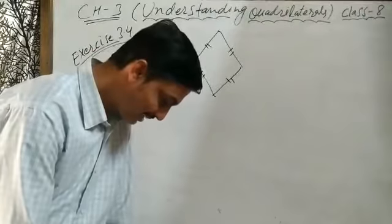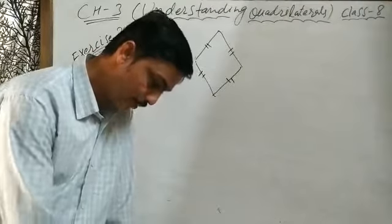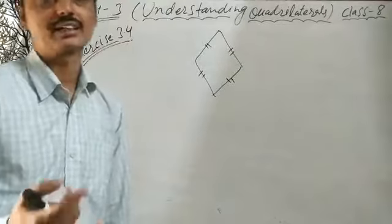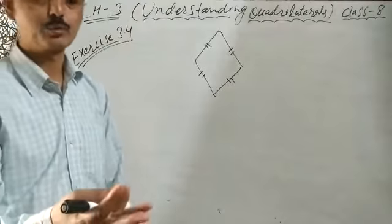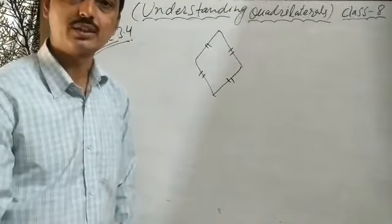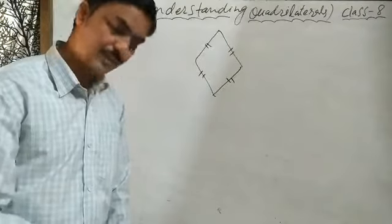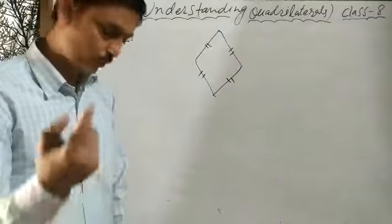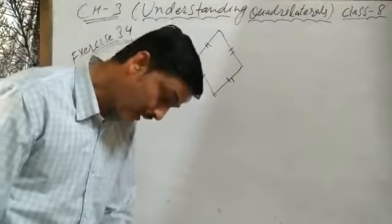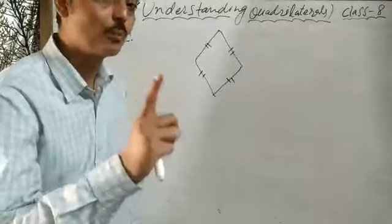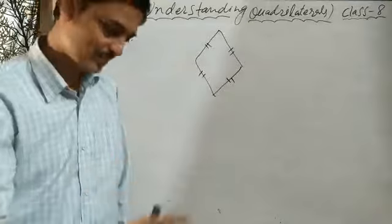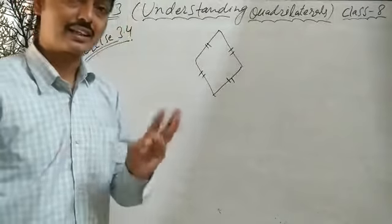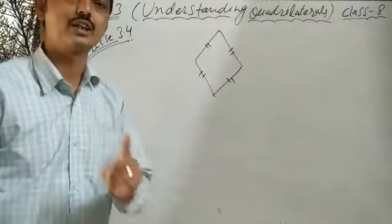Question 4: Name the quadrilaterals whose diagonals bisect each other. Diagonals bisect each other in rectangle, square, rhombus, and parallelogram. The diagonals are perpendicular bisectors in rhombus and square, but not in rectangle. Diagonals are equal in rectangle and square.